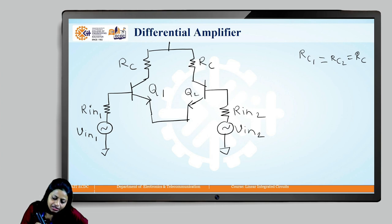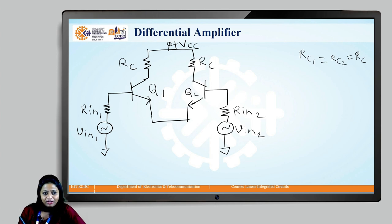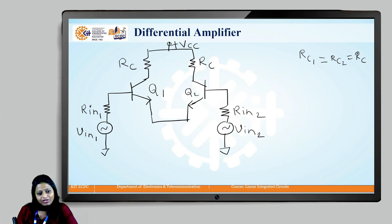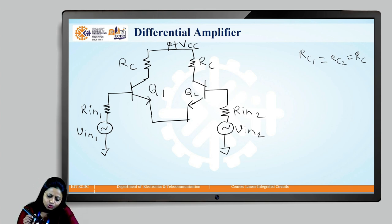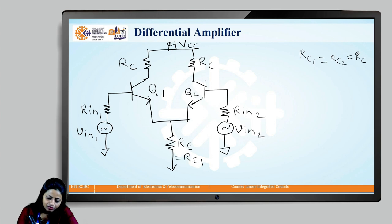The first condition is that we should connect their collector terminals together and connect them to the positive supply voltage, plus VCC. We have applied two input voltages to the respective base terminals of Q1 and Q2, called VIN1 and VIN2, and their emitter resistors have been connected together. When connected in parallel, they form a single resistor RE, which is the parallel combination of RE1 and RE2, connected to the negative supply voltage minus VEE.